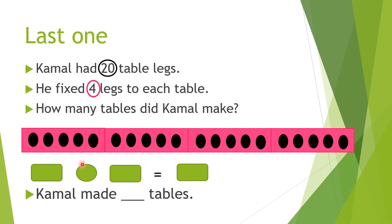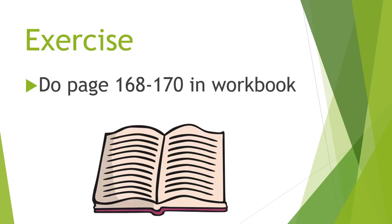Now we choose one box and count how many dots: 1, 2, 3, 4, 5. So the answer is 5. Now we write the division sentence. The bigger number is 20 divided by smaller number is 4, and then answer is 5.